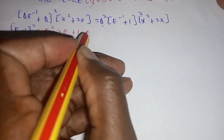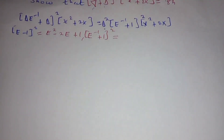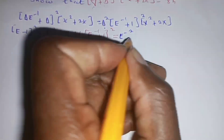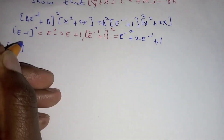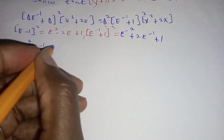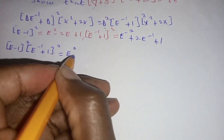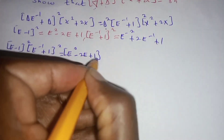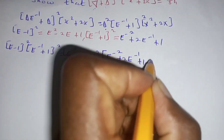We also square the E plus one part. When we square that, the result will be negative two plus two E plus one. Then we write out E minus one, squared, multiplied by E plus one, squared, which is equal to E squared minus two E plus one, multiplied by E minus two plus two E minus one plus one.